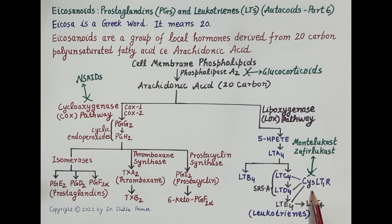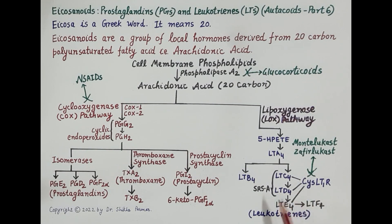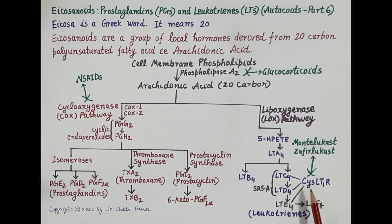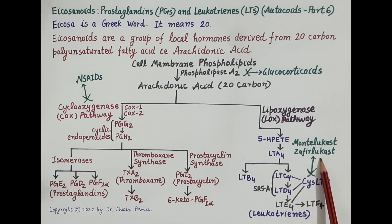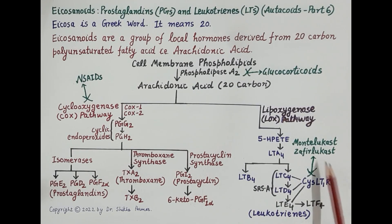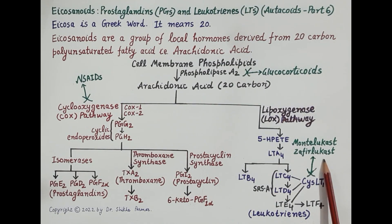Drugs like montelukast and zafirlukast are leukotriene-1 receptor antagonists. These drugs block leukotriene-1 receptors, thereby inhibiting the binding of LTC4 and LTD4. Since they inhibit bronchoconstriction and mucus secretion in the bronchial tract, montelukast and zafirlukast are very useful in the management of asthma.